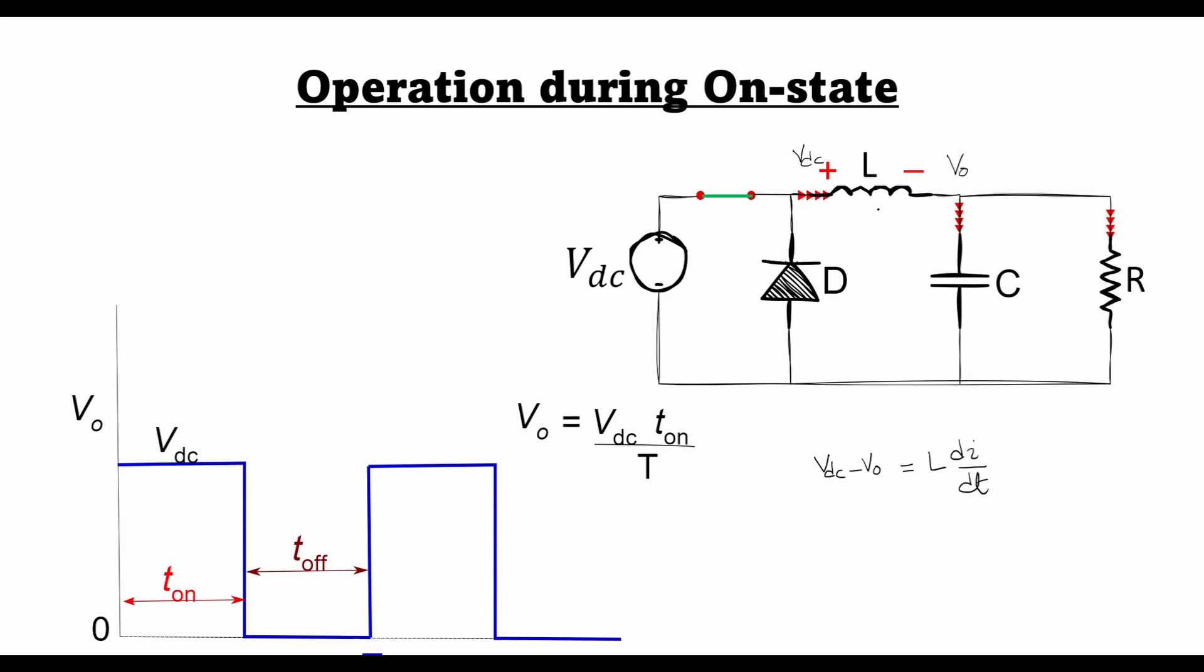I is the current that is flowing through the inductor. From here I can calculate DI by DT as VDC minus V0 divided by L. This expression is the slope of the current flowing through the inductor.